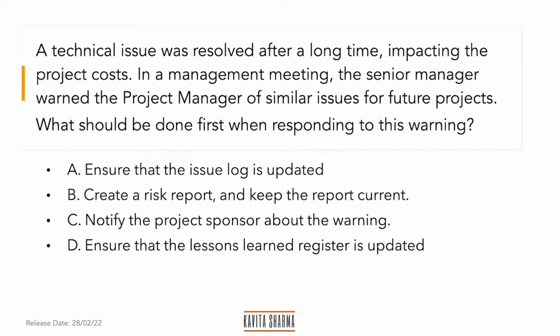The keywords you can see are: 'issue' is one keyword, and the second keyword is 'warning.' The thing we generally omit is the word 'first' — it is also a very important word. Whenever you see 'first,' it means we're talking about a sequence of events. So what is the first thing you're going to do?